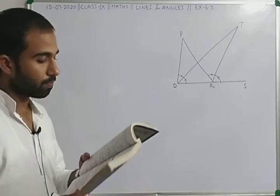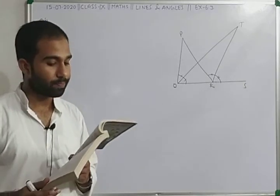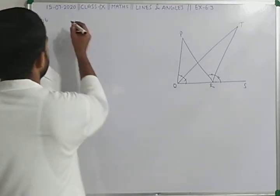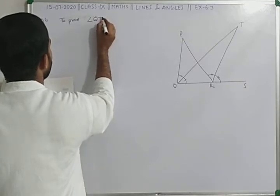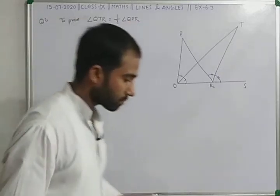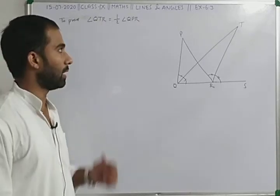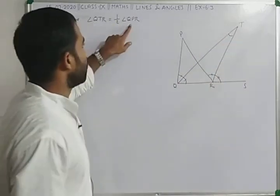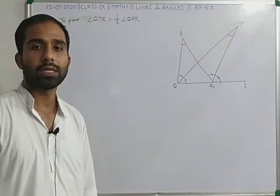This is the last question of this chapter. In the given figure, side QR of triangle PQR is produced to point S. If the bisectors of angle PQR and angle PRS meet at point T, then prove that angle QTR equals half of angle QPR. This exercise is based on Theorem 6.7 and Theorem 6.8.